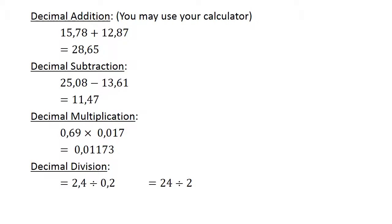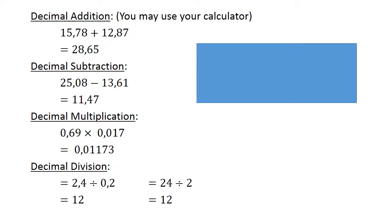Decimal Division: 2.4 divided by 0.2 equals 12. Remember, we multiply both by 10 to get whole numbers: 24 divided by 2 equals 12.